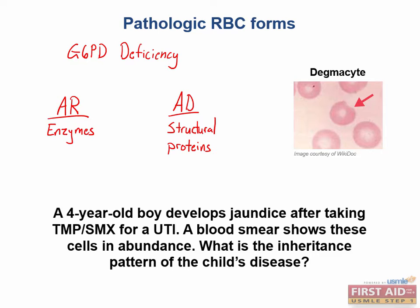Unfortunately, there is one catch to this trick, and it's why I said it works for most inheritance patterns — diseases like G6PD deficiency are X-linked recessive. So in males, it only takes one mutation of an enzyme to elicit disease because there's only one allele. Some of these questions may seem tricky at first, but they're all about buzz words and buzz pictures in RBC histology. Hematology is a classic place for these buzz pictures, and recognizing them will really help you ace your heme-onc section.